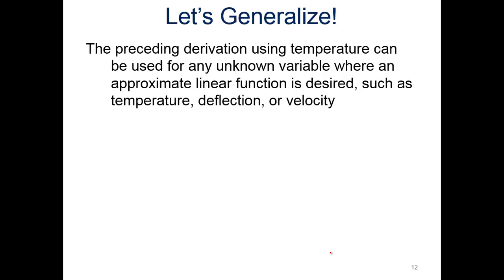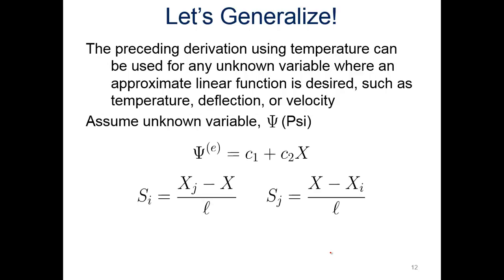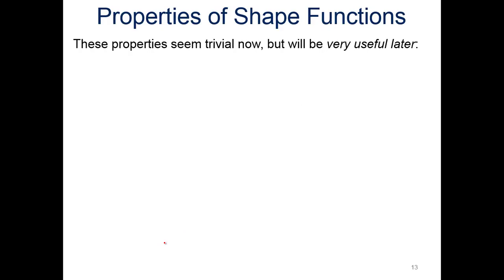Let's generalize this. We've looked at using temperature here, but we can do this with anything. We can do this with deflection, we can do this with velocity. We can assume an unknown variable, ψ (psi). Psi is equal to c1 plus c2 times x, with the same shape functions as what we have for the temperature. We can replace psi with temperature, deflection, velocity. Any of those could be that psi variable. That's the beauty of what we're doing right now.